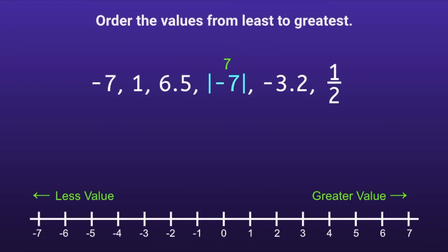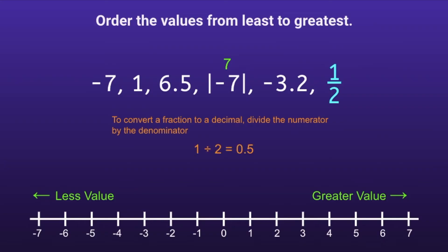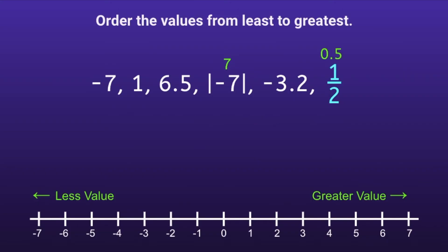We also need to adjust the fraction. The good news is we can easily convert a fraction to a decimal. In order to convert a fraction to a decimal, divide the numerator by the denominator. So we would do 1 divided by 2, which is equal to 0.5. So 1 half is equivalent to 0.5.